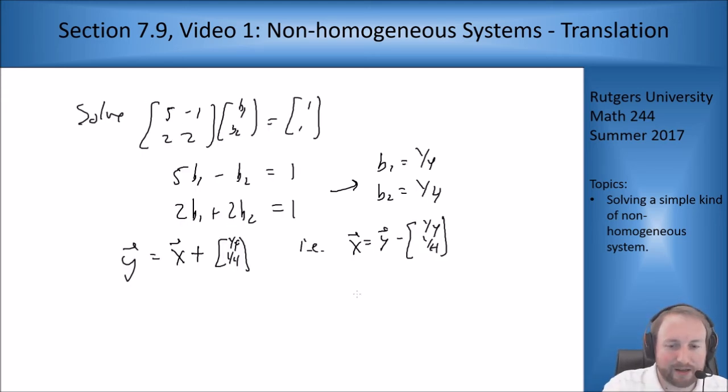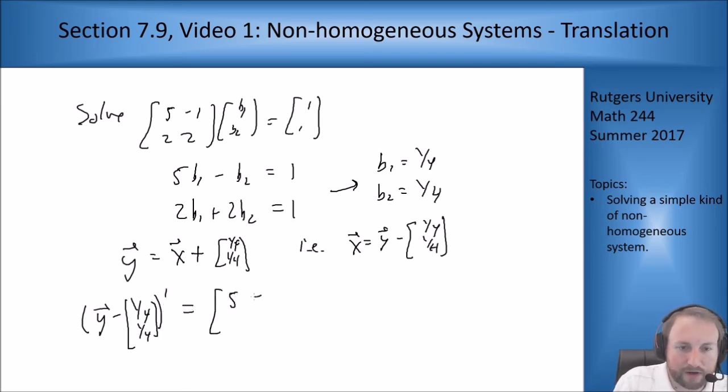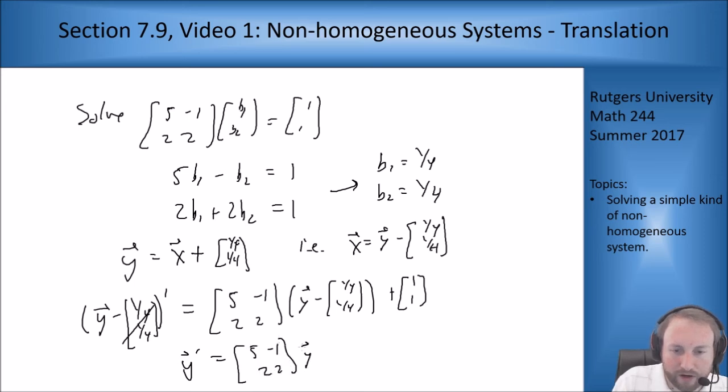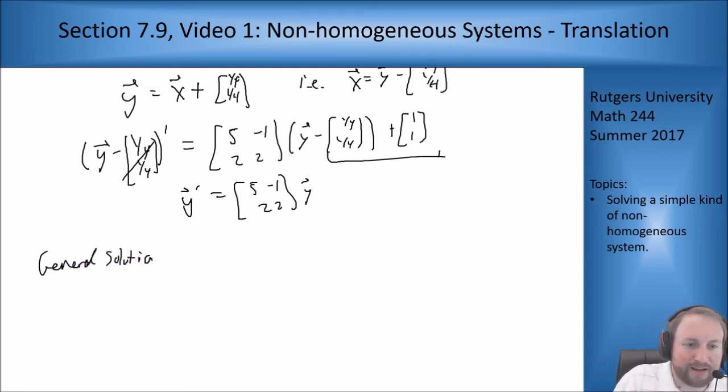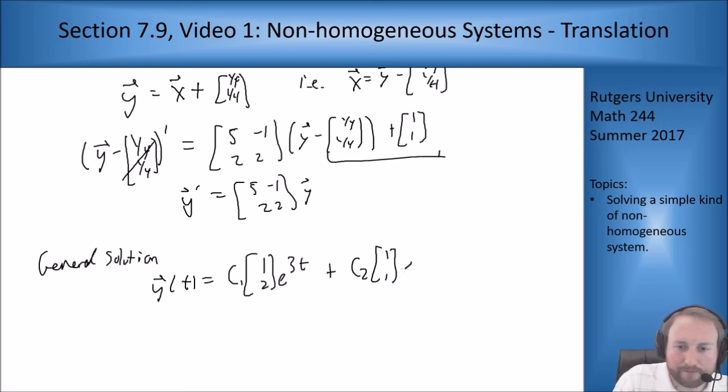If I plug this in then I will see that [y minus [1/4; 1/4]]' equals [5 -1; 2 2] times [y minus [1/4; 1/4]] plus the vector [1; 1]. The derivative here is zero so I just end up with y prime equals [5 -1; 2 2] times y, and then these two terms will cancel. The general solution to this is y(t) = c₁[1; 2]e^(3t) + c₂[1; 1]e^(4t).